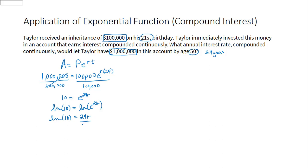Using our calculator, we get r ≈ 0.0794. This means that Taylor needs to invest his money at 7.94% interest compounded continuously for 29 years to have $1 million by age 50.